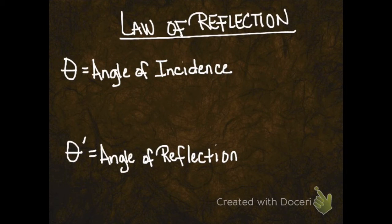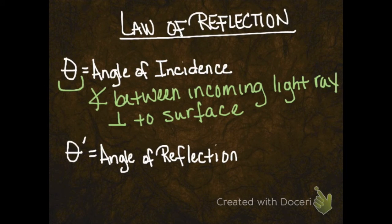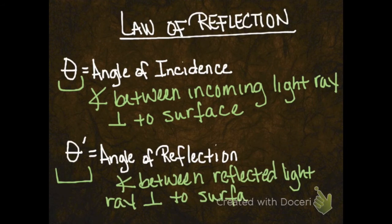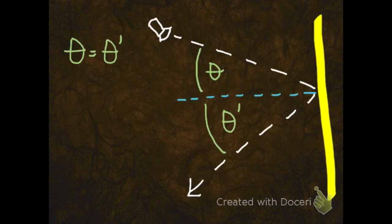There is a law of reflection. This law states that the angle of incidence is equal to the angle of reflection. Your angle of incidence is represented by theta, which is right here. This is the angle between the incoming light ray and the ray perpendicular to the surface. We also have the angle of reflection, represented by theta prime, which is right here. The angle of reflection is the angle between the reflected light ray and the line perpendicular to the surface.